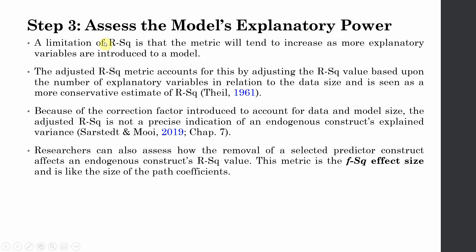A limitation of R-square is that the metric will tend to increase as more variables are added into the model. The adjusted R-square metric accounts for this by adjusting the R-square value based on the number of explanatory variables in relation to the data size, and is seen as a more conservative estimate of R-square. Because of the correction factor introduced to account for data and model size, the adjusted R-square is not a precise indication of the endogenous construct's explained variance.